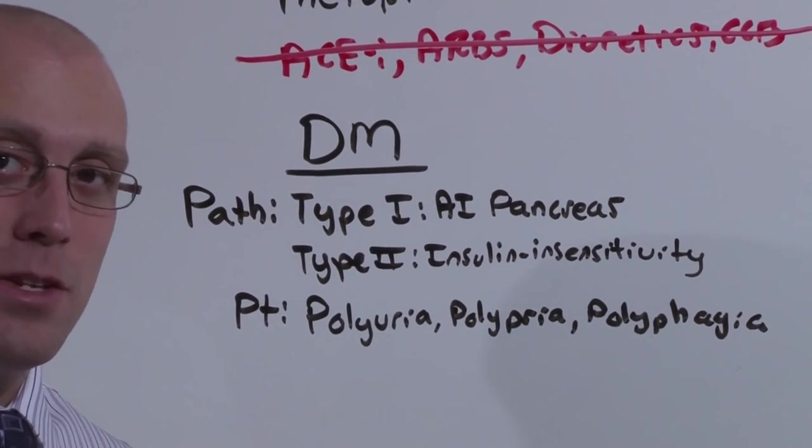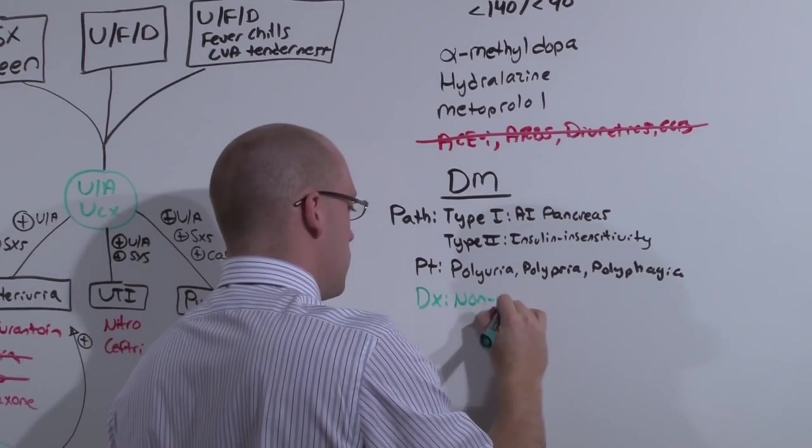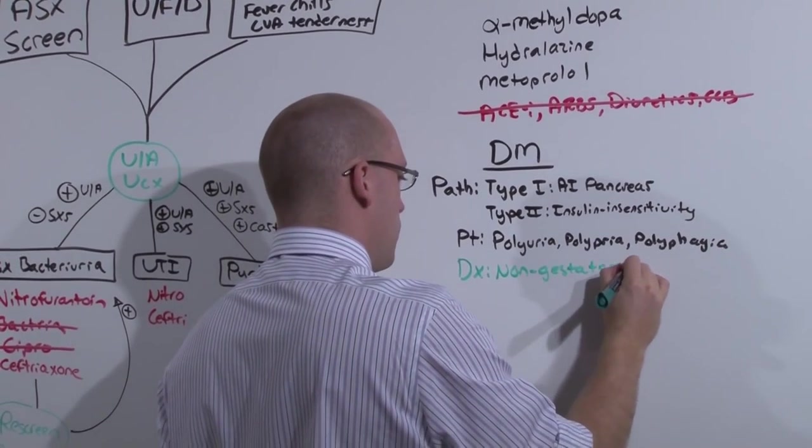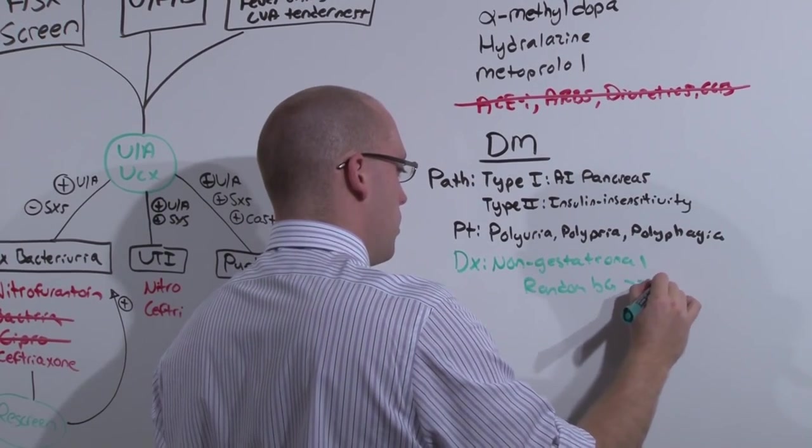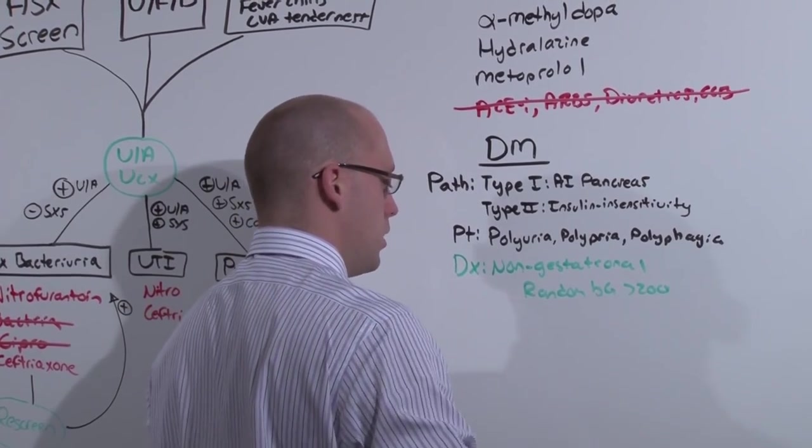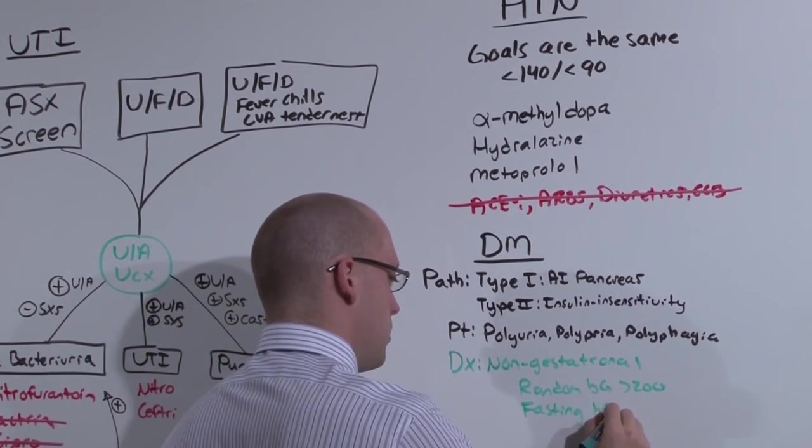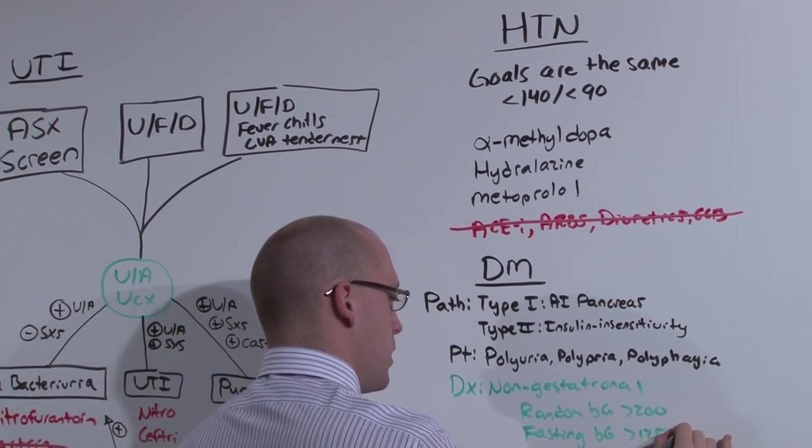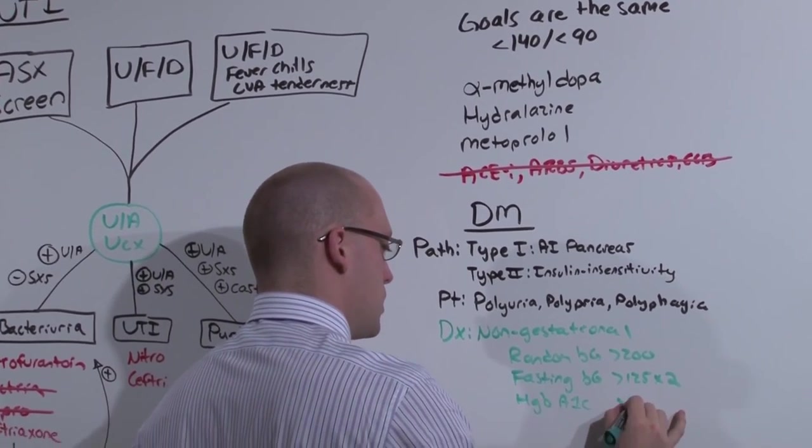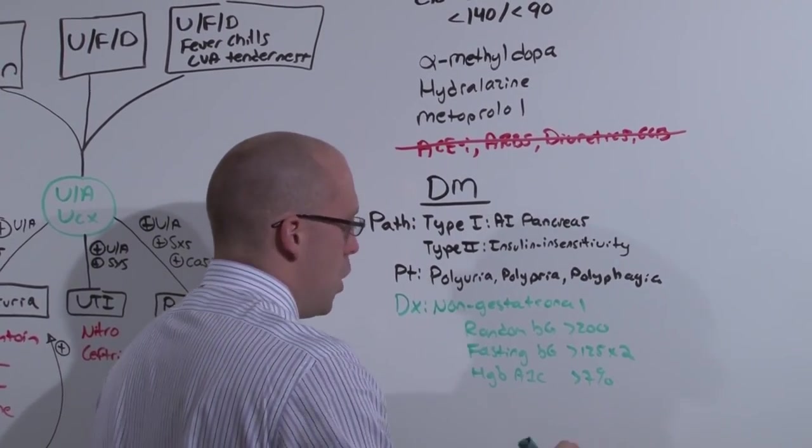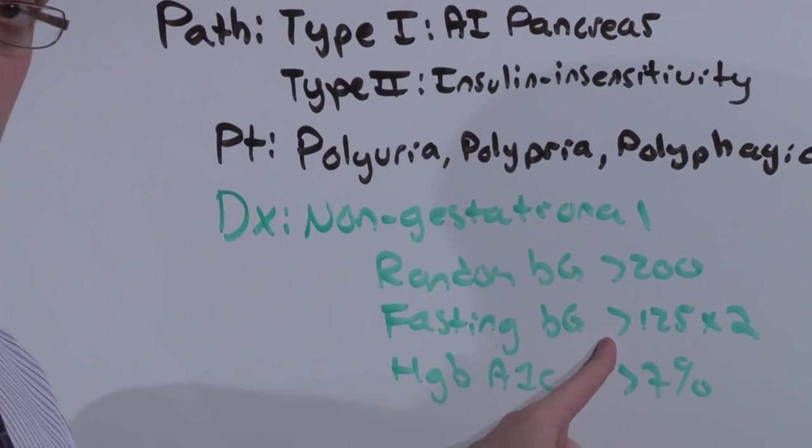Now in order to diagnose diabetes, there's a couple of ways you can do it. And we're talking about non-gestational diabetes. Either you have a random glucose greater than 200, one time random glucose greater than 200, diabetes. A fasting glucose greater than 125 on two separate occasions. You can use the hemoglobin A1c now, if that's greater than 7%, diabetes.